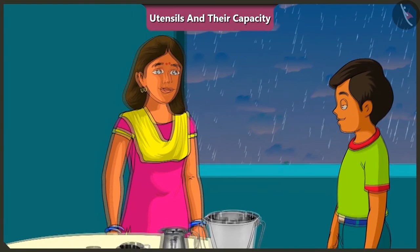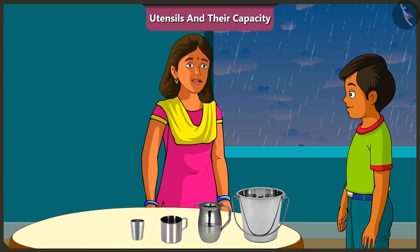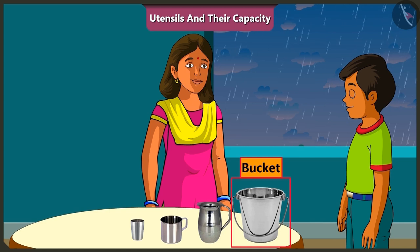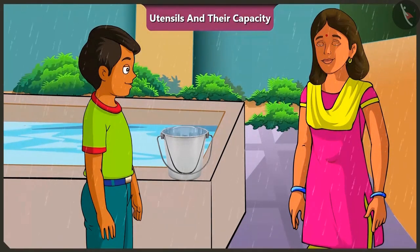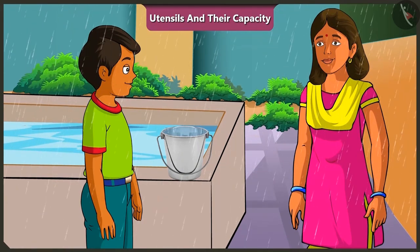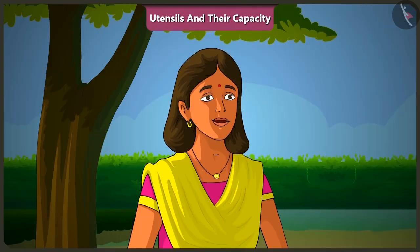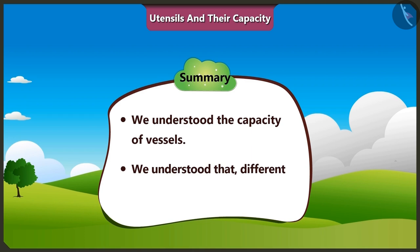Well done, Mishtu! It has started raining. Mishtu, just tell me, which vessel should we use to collect rainwater? We should collect it in this bucket, because the bucket has the highest capacity. And with the help of this bucket, it will be possible to fill the tank much faster. So children, today along with Mishtu, we understood the capacity of vessels and that different vessels have different capacities.